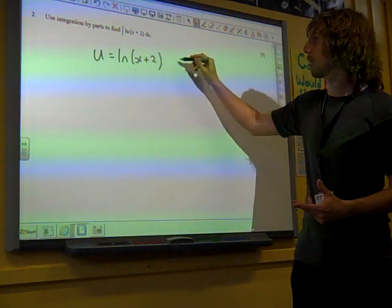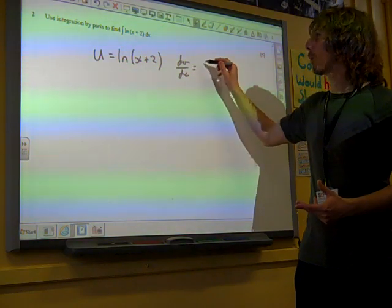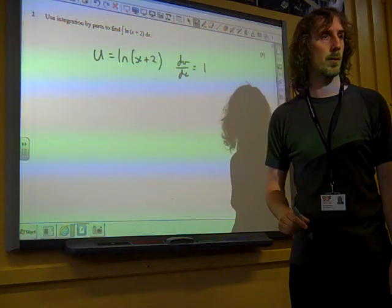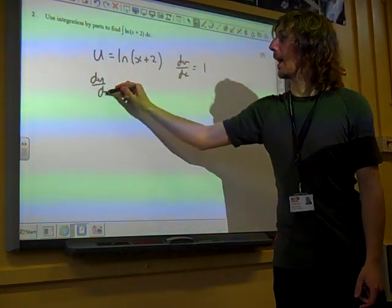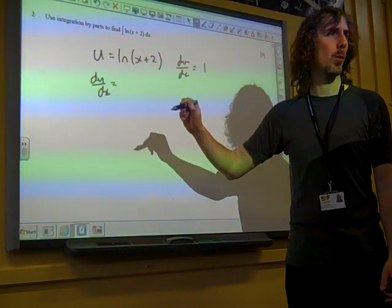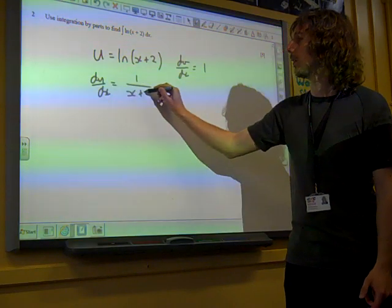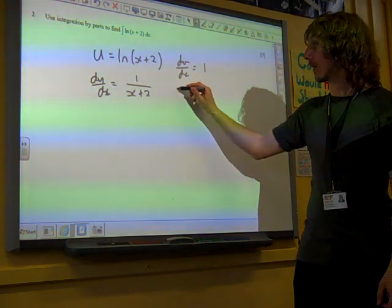The thing that we're going to integrate is one, because it's one times ln(x+2). So we're going to differentiate ln(x+2) gives us what? One over x plus two. Integrate one, and we get x.